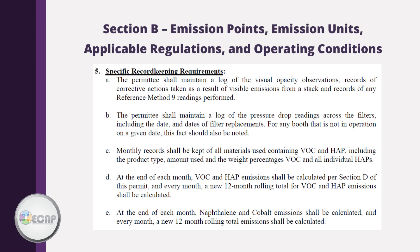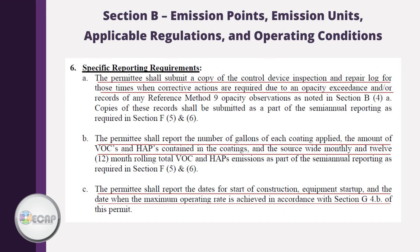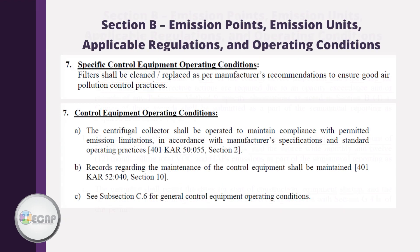Record Keeping Requirements: some permits will list or potentially relist all the required records, or will reference another portion of the permit that has already indicated the record keeping requirement. Records can be kept on paper or electronically. For example, this permit requires opacity logs, paint booth logs, material usage logs, rolling total emission calculations, and — looking at item E — the facility also has lower limits on naphthalene and cobalt emissions due to an air toxics assessment. For reporting requirements, the same theory applies — if you are required to monitor, then record and report. Section 7 contains control equipment requirements; make sure you keep records of any maintenance, such as when you change out filters.